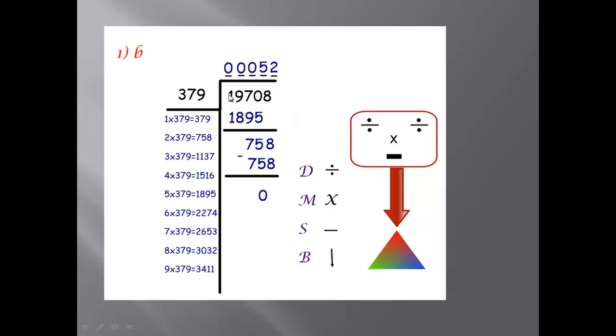19,708 divided by 379. Try 19 divided by this number, less than. We write 0. 197 divided by this number, also less than. We write 0. Until we take 1,970, which is greater than 379. We can divide.